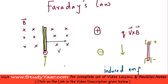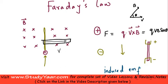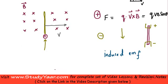The force that a charge particle experiences is given by F = q(v × B), which equals qvB sinθ, where θ is the angle between your velocity vector and your magnetic field vector. In our case, this angle is 90 degrees — v is horizontal and the magnetic field vector is perpendicular, going into the screen. So the force on a particle in this conductor is simply qvB.